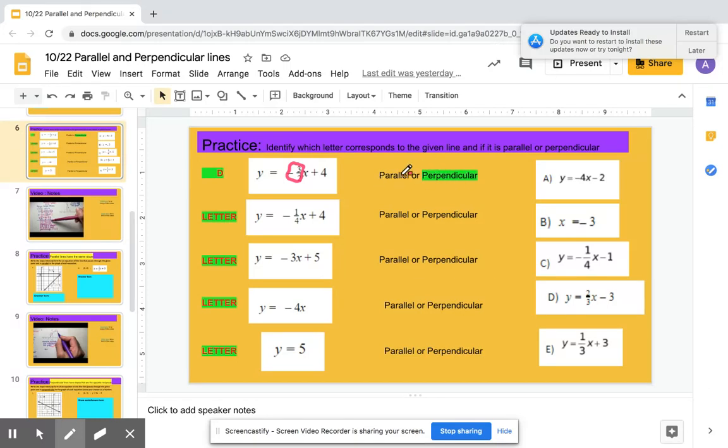If it's parallel, it's the same. If it's perpendicular, it's opposite reciprocal. So here I have negative 4. The slope is undefined for b. In y, the slope is negative 1 fourth. And in letter D, I can recognize that the slope is positive 2 over 3.